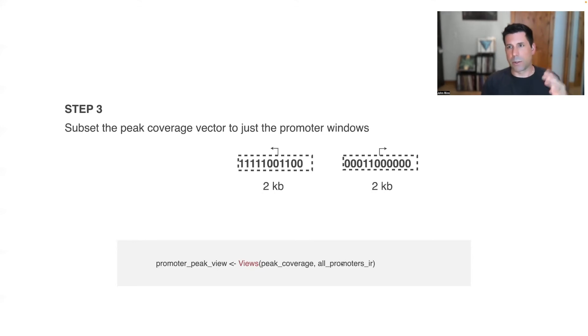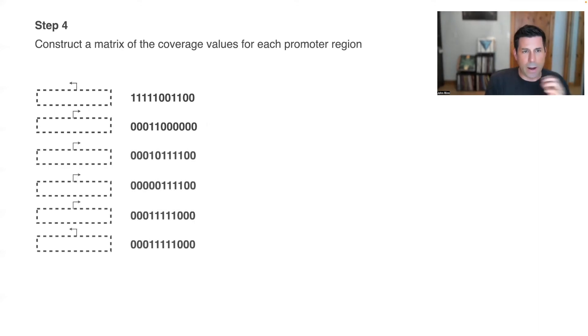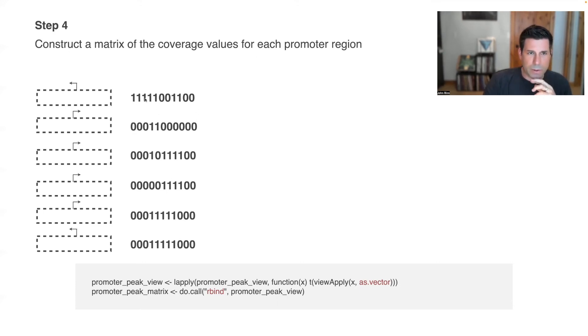We'll convert both our promoters list and our peaks list to an integer range list and run a function with views, which is essentially like find overlaps. It's going to find the overlaps between the peak coverage ones and zeros and where the positions of the promoters are. Now we can make a list for each promoter of how many positions had peak overlaps or not. This is a really handy concept - it's subtly similar to just finding overlaps, but now we're getting a position of where that overlap was in a given window rather than just yes or no. We're getting a lot more information.